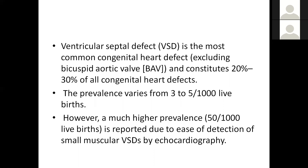VSD is the most common congenital heart defect, excluding bicuspid aortic valve, and constitutes 30 to 50% of non-cyanotic heart defects. Prevalence varies from 3 to 5 per live births, but more recent studies show higher prevalence due to ease of detection of smaller VSDs by echocardiography.